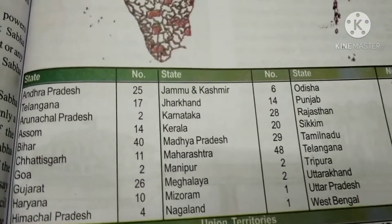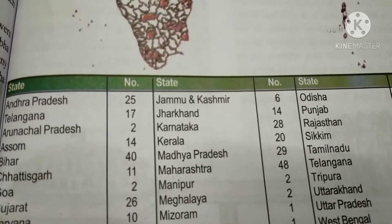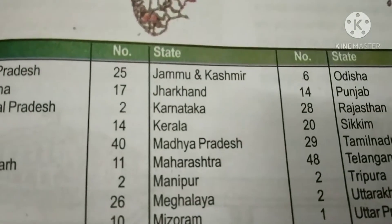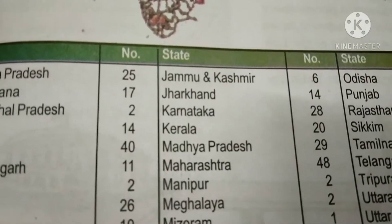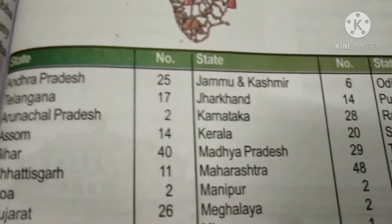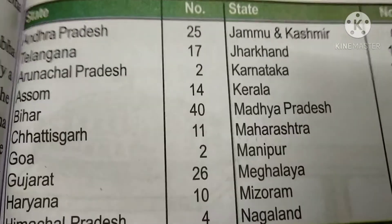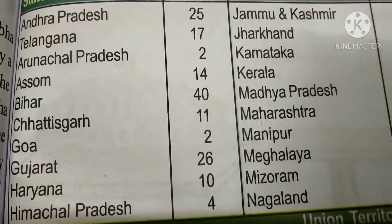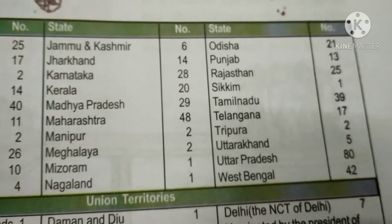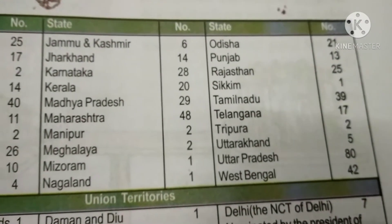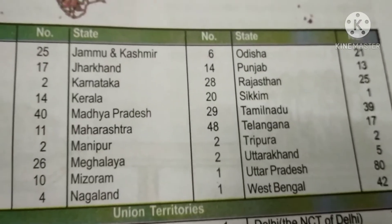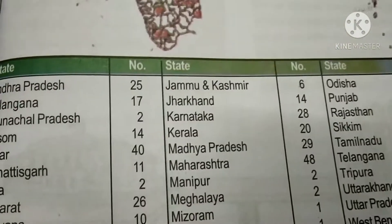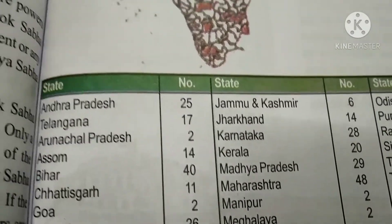In Andhra Pradesh, there are 25 Parliament seats. In Telangana, there are 17 Parliament seats. Maharashtra has 48 Parliament seats. Bihar has 40. Gujarat has 26. Tamil Nadu has 39. And Uttar Pradesh has the maximum — the highest seats — 80 Parliament seats.